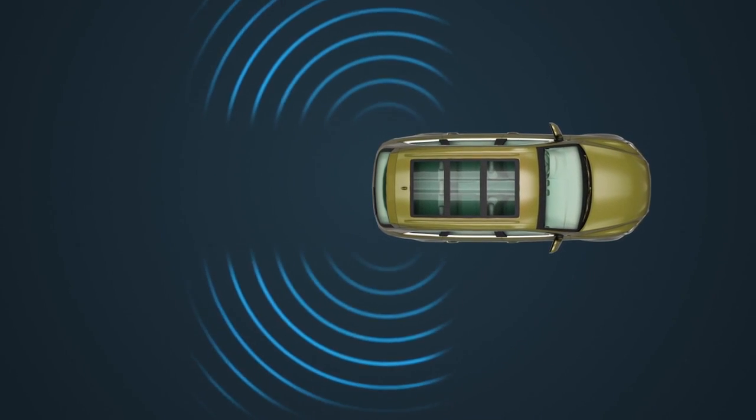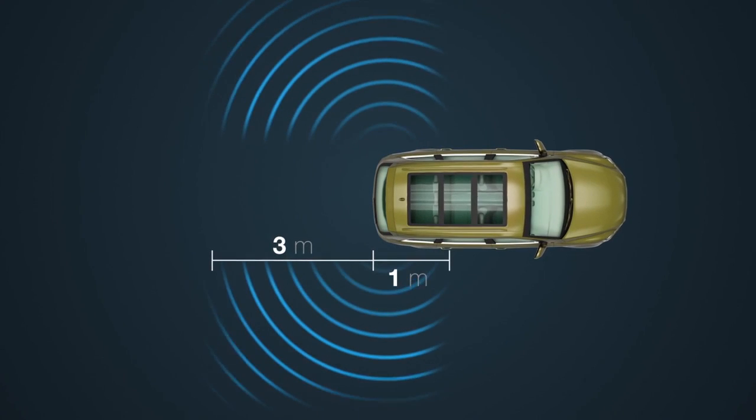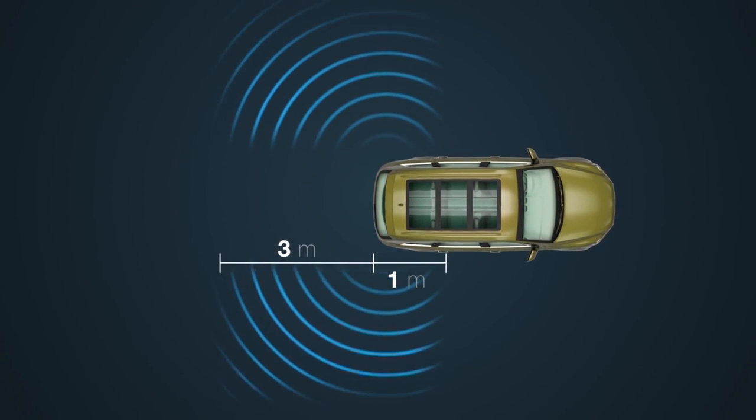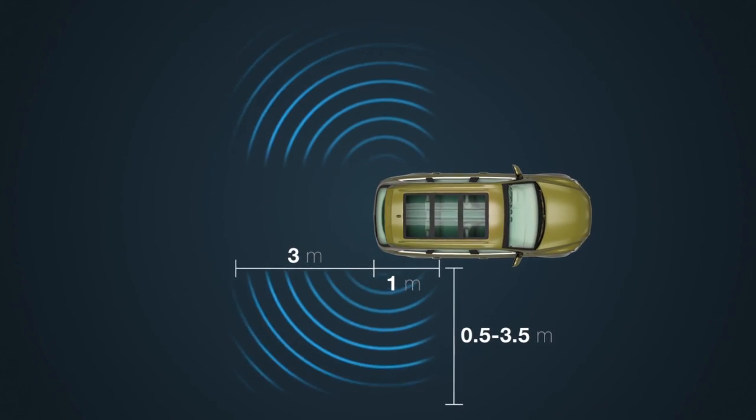The area in which a target vehicle can be detected extends from up to 3 meters behind to 1 meter ahead of the back of the Toyota's rear bumper, and from 1.5 to 3.5 meters outward on either side of it.